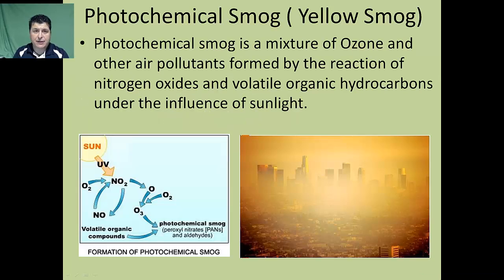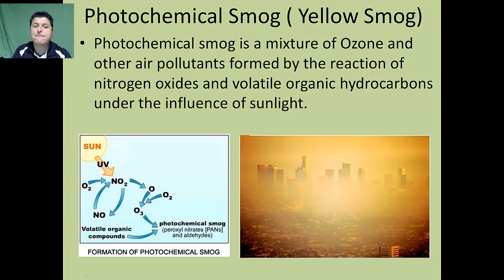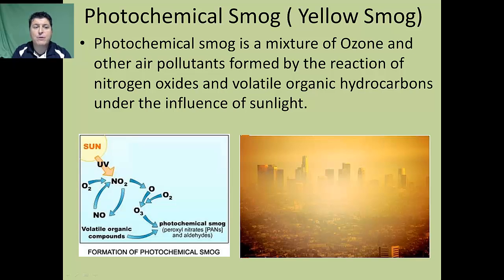Another secondary air pollutant is photochemical smog, or yellow smog. Photochemical smog is a mixture of ozone and other air pollutants formed by the reaction of nitrogen oxides and volatile organic hydrocarbons under the influence of light. We find photochemical smog in large cities where there are many automobiles producing those nitrogen oxides.